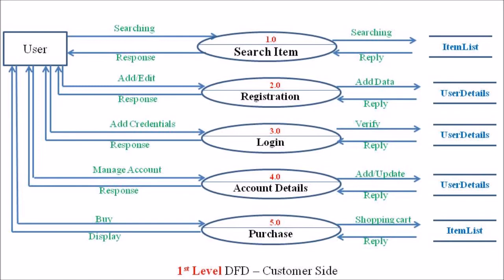Each of these individual processes can be expanded into the next level — that is, the level 2 DFD — which includes expansion of the five processes: search item, registration, login, account detail, and purchase. In level 2 we can add more sub-processes as well as more data stores. This is how we represent a level 1 DFD at the customer side of an online shopping website.